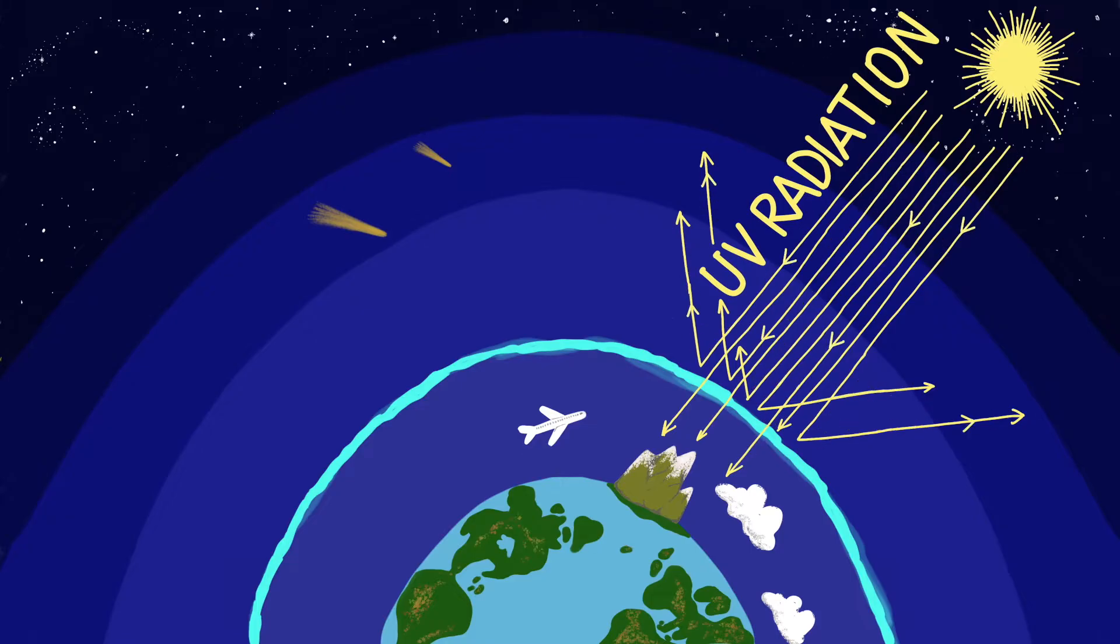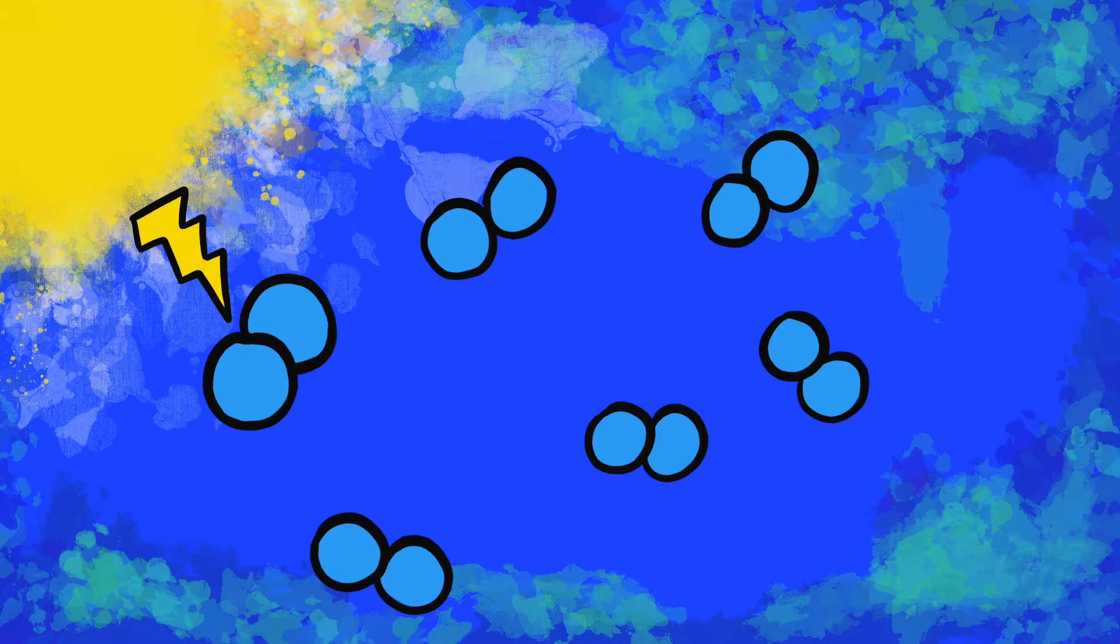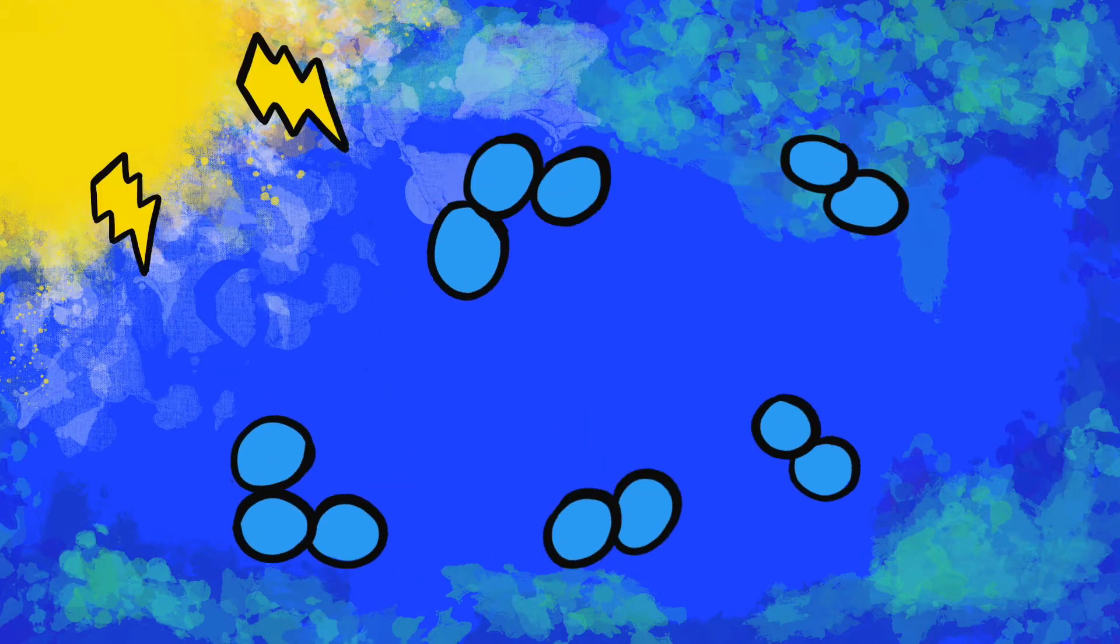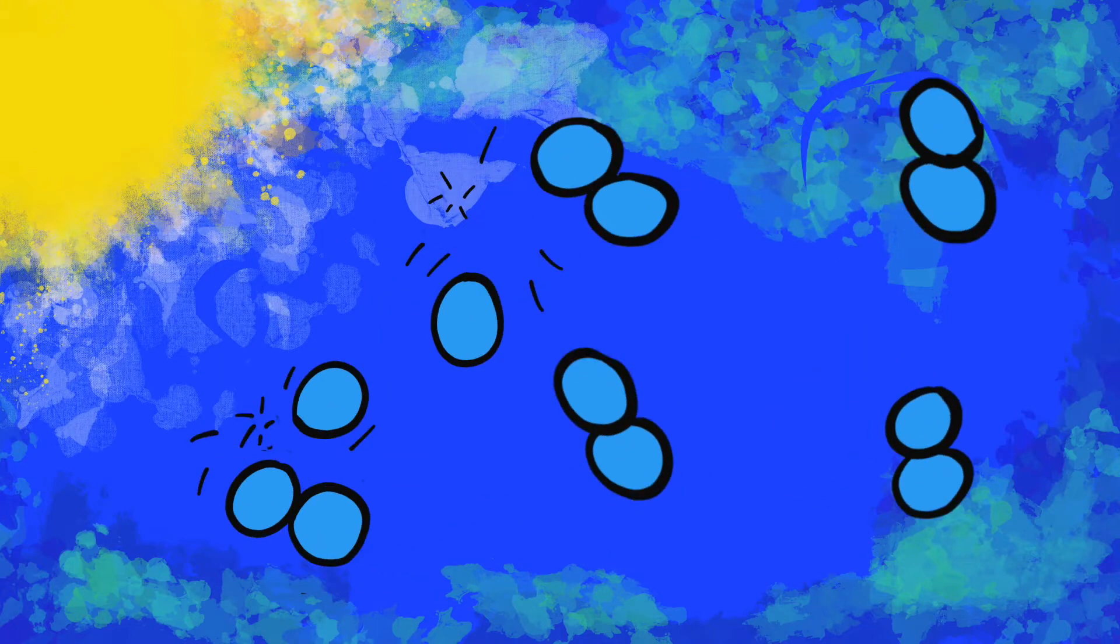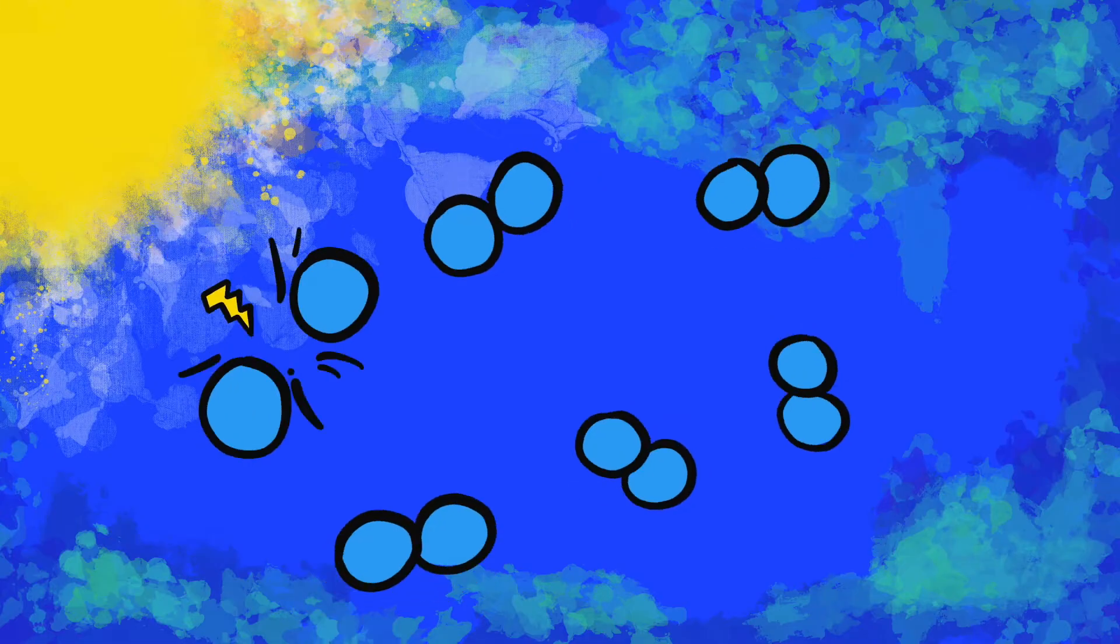Without it, we wouldn't be able to survive on Earth. The ozone layer is formed naturally by chemical reactions involving ultraviolet radiation from the sun and oxygen molecules. They continually break apart and combine to form ozone molecules.